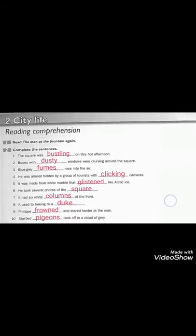Five, it was made from the white marble and glistened like arctic ice. Glistened here means لامع، كانت مصنوعة من الرخام الأبيض that glistened like arctic ice، كان يلمع مثل جليد القطب الشمالي. Six, he took several photos of the square، أخذ أو التقط صور عديدة للساحة. Seven, it had six white columns at the front، ست أعمدة كان فيه في المقدمة في الأمام. Eight, it used to belong to a duke، كان يعود إلى الدوق. Nine, Philip frowned and stared harder at the man، كان Philip يحدق بشدة إلى الرجل وهو اللص. Ten, startled pigeons took off in a cloud of gray. Pigeons here means الحمام.